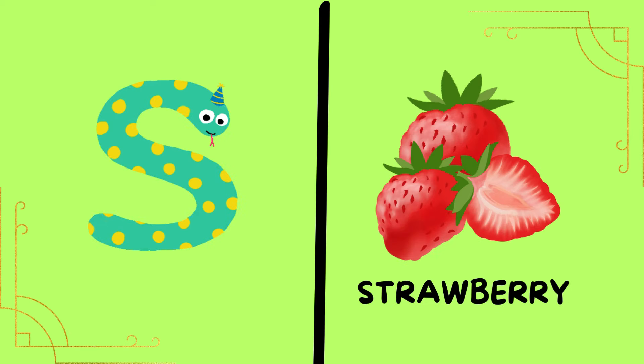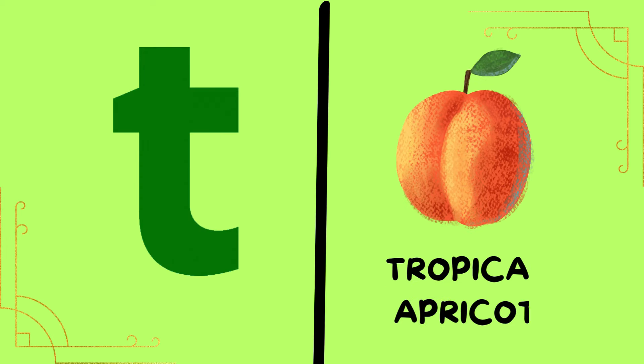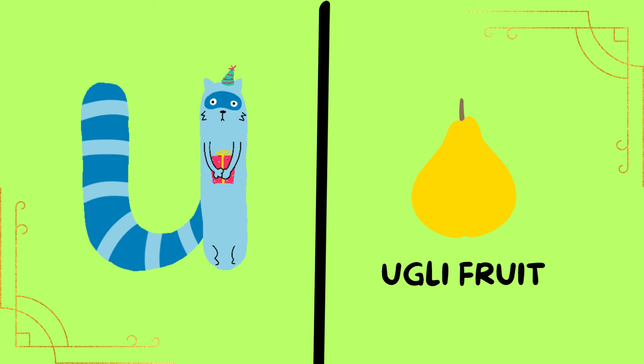S is for strawberry. S is for strawberry. Now I know my ABCs, next time won't you sing with me. T is for tropical apricot. T is for tropical apricot. T is for tropical apricot.